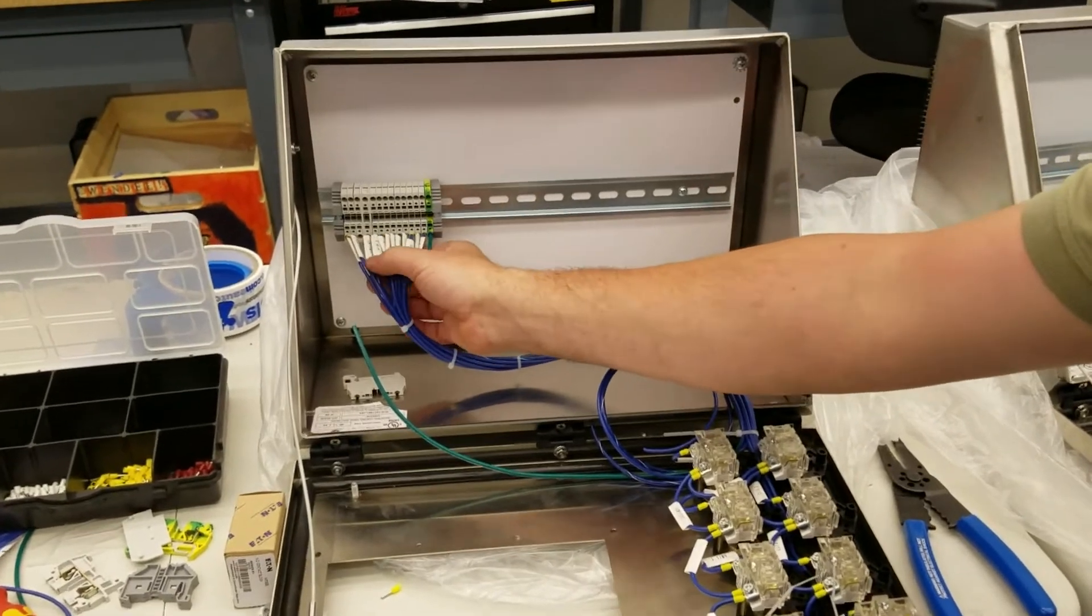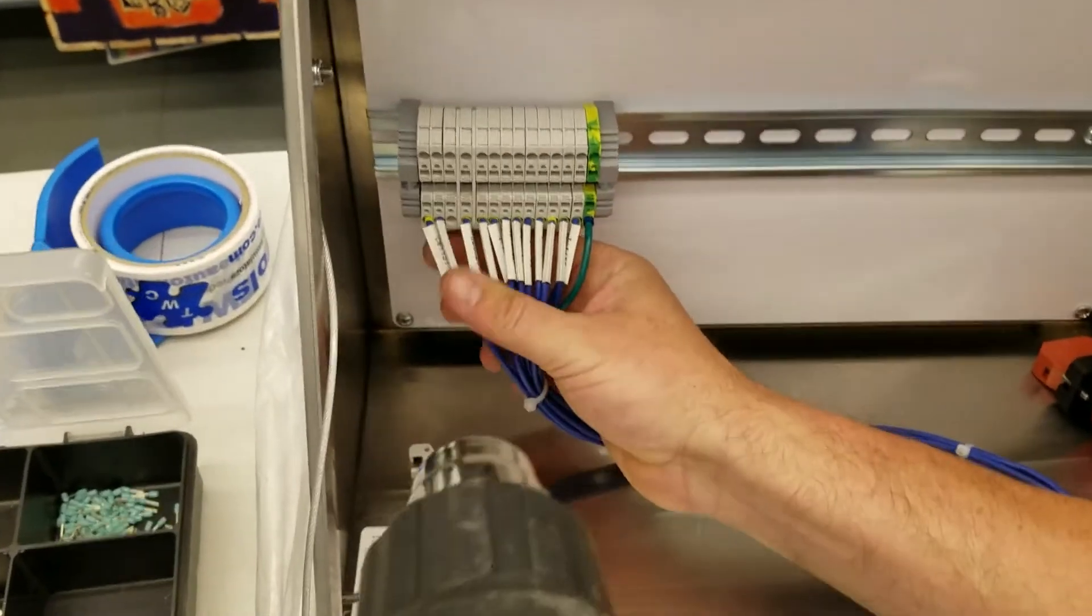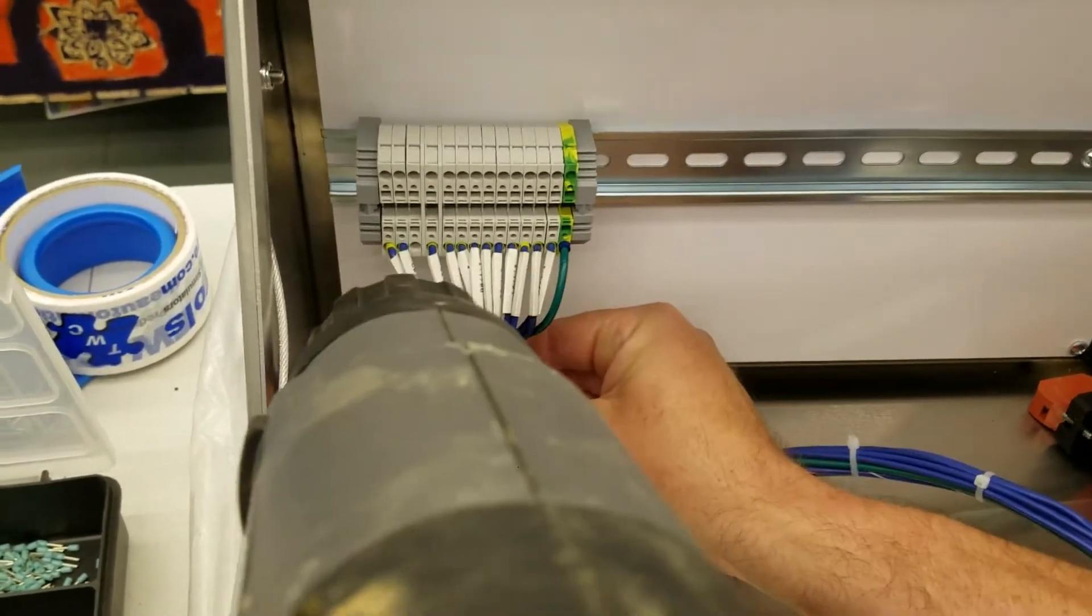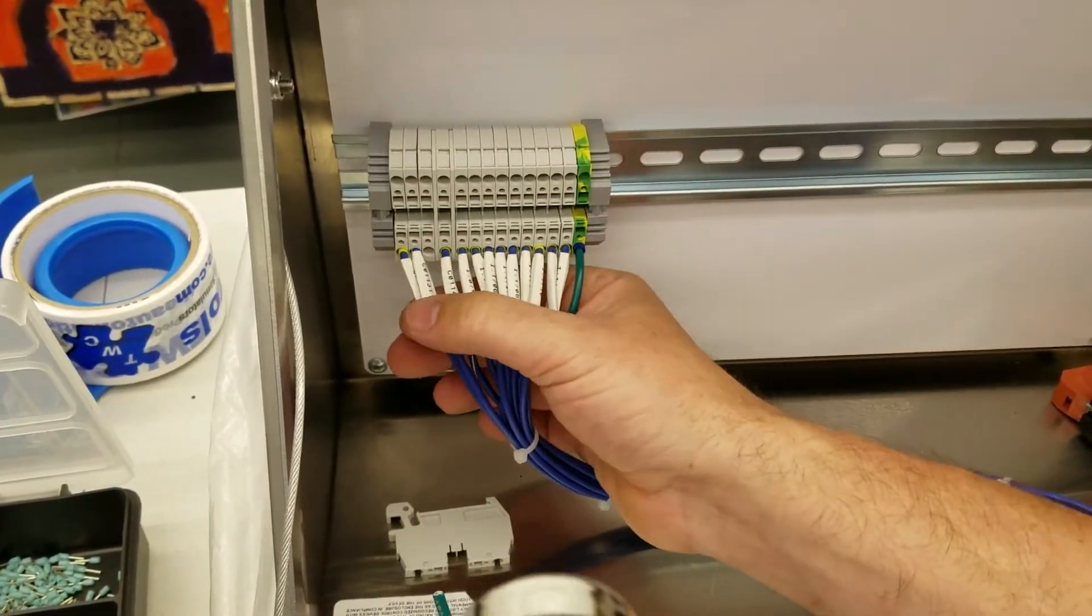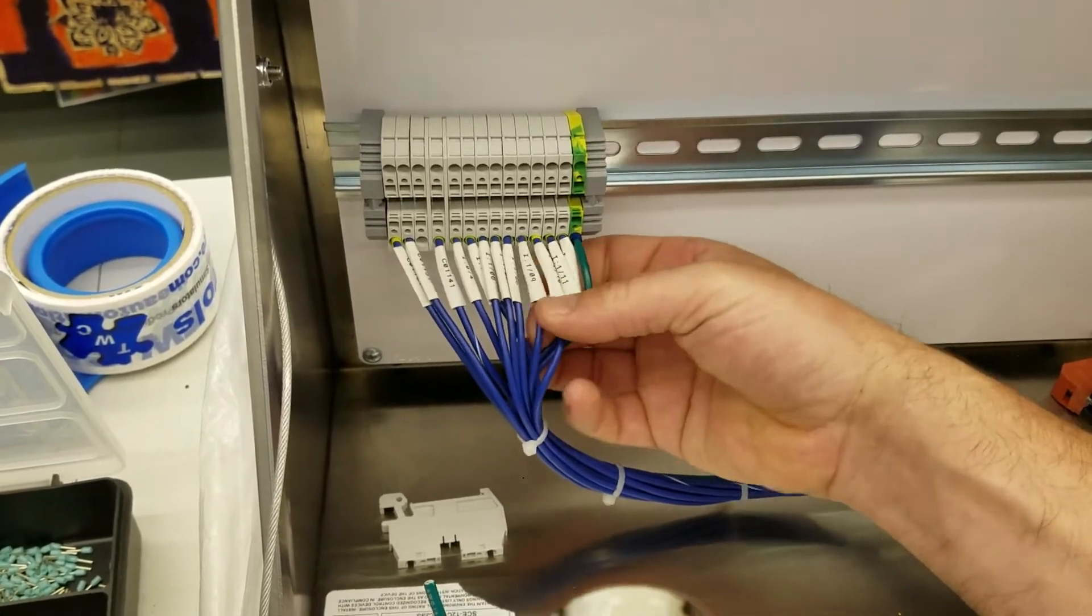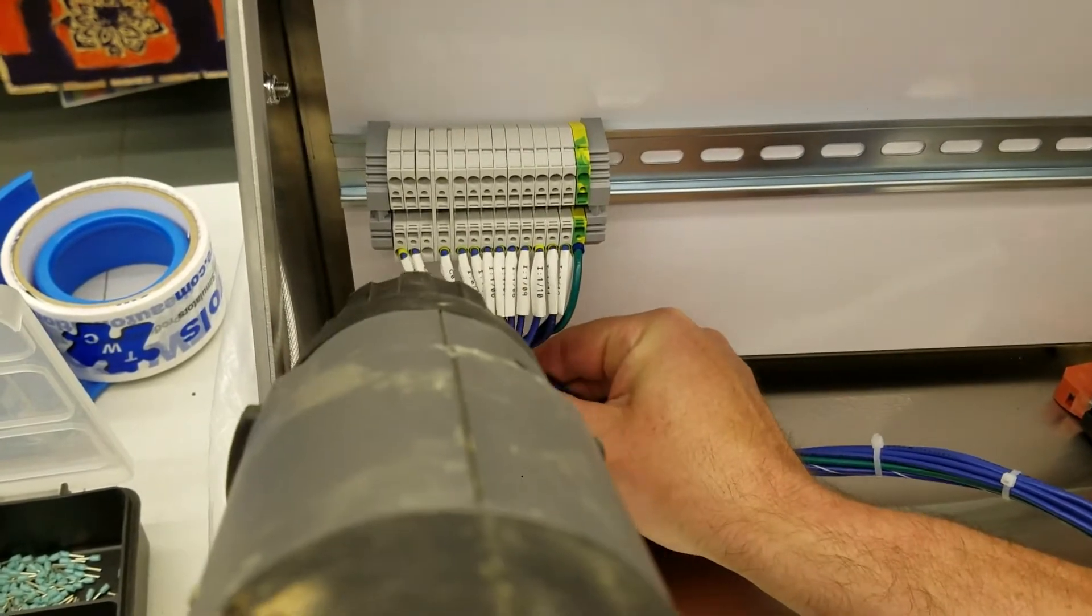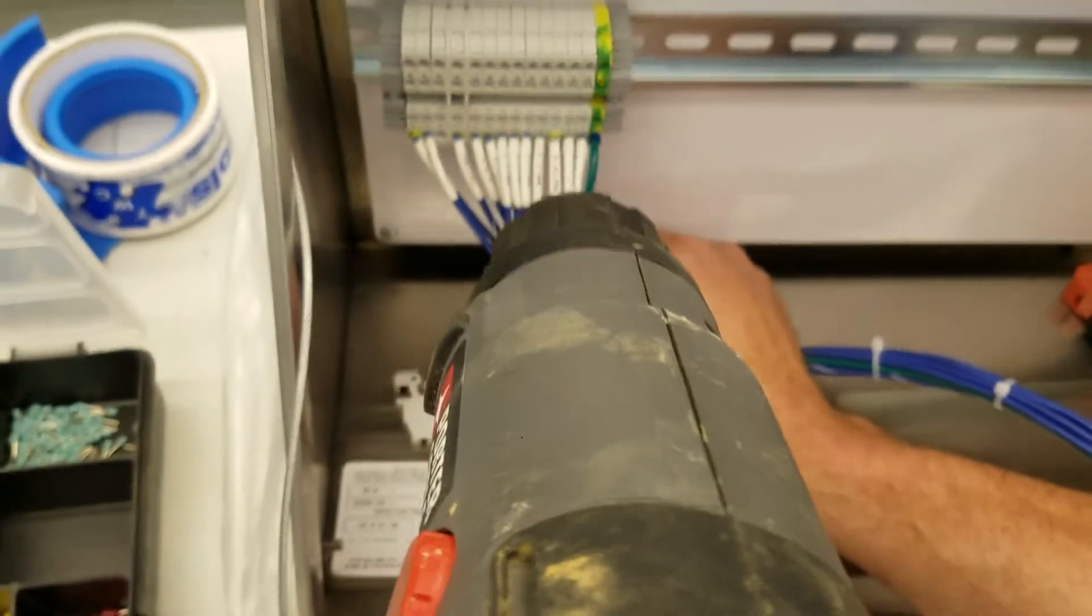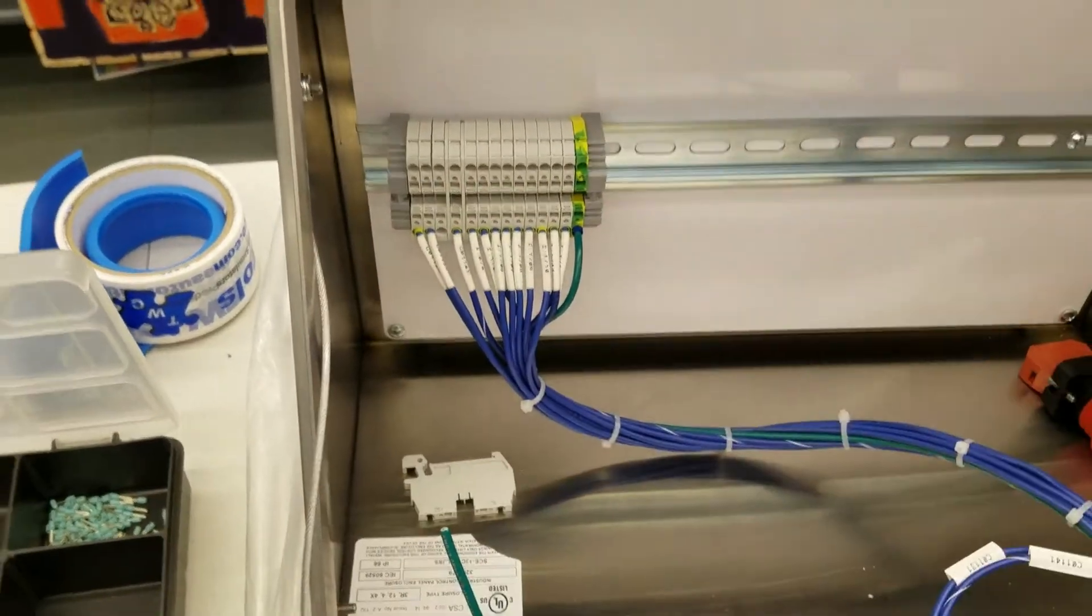Then we just need to heat shrink these labels. Make sure they're all lined up exactly where you want them. Just heat them up a little bit. Rotate them all real nicely. Get them at the right height. Beautiful.